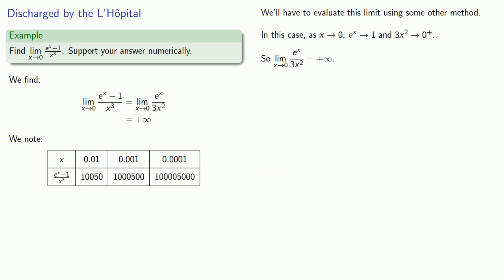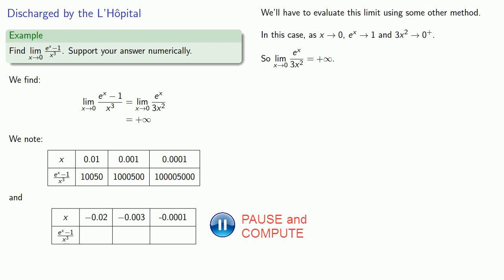And since all of these x values are positive, we'll take a couple of negative x values and mix it up a little bit. And we see that this does make it appear that as x gets close to 0, our function values do get close to positive infinity.